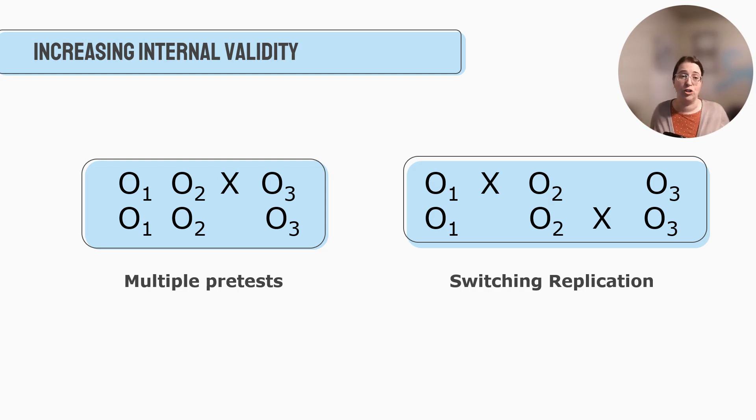Another design that we can do to increase internal validity is switching replication. And so this is a little bit confusing, but it's where you have two groups. You don't have random assignment. You have one group and maybe another group, a comparison group of some sort. And let's say we do a pre-test for both groups. We really want to see are they pretty similar at the beginning? Then we give the intervention to one group, and then we do a post-test. So that O2. So we can say was there a change between the two groups on the post-test? Then what we do is we give the second group, the comparison group, the intervention, and then we do a post-test.